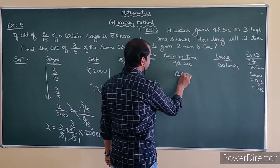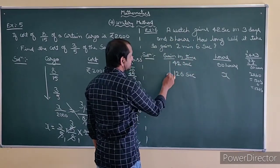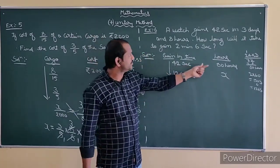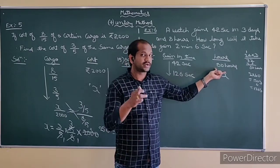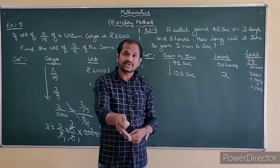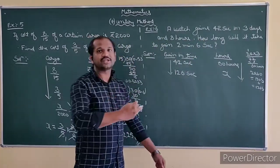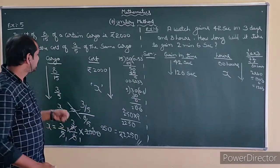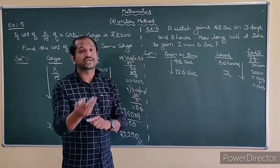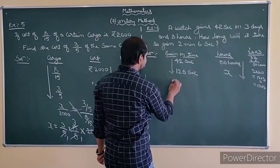How long will it take to gain 2 minutes and 6 seconds? 2 minutes and 6 seconds means how many seconds? 2 minutes is 2 into 60 equals 120, that is 120 seconds plus 6 seconds, so it is 126 seconds. To gain 126 seconds, how many hours? Obviously it is increasing — for 42 seconds it takes 80 hours, so for 126 seconds the hours will increase. This is another example of direct variation.